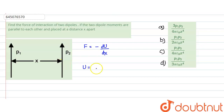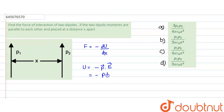The potential energy at any point for a dipole is given as U = -p·E, that is the dipole moment dot product with the electric field, or we can say U = pE cosθ, where θ is the angle between p and E.